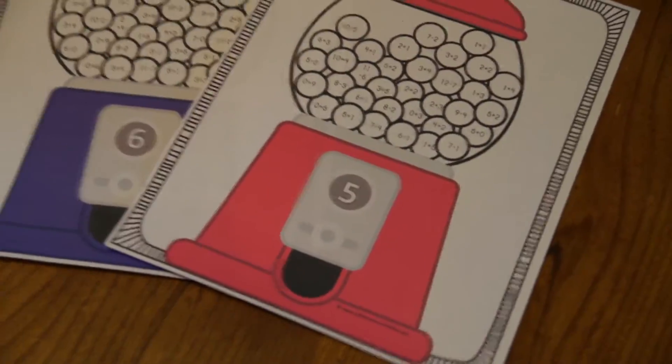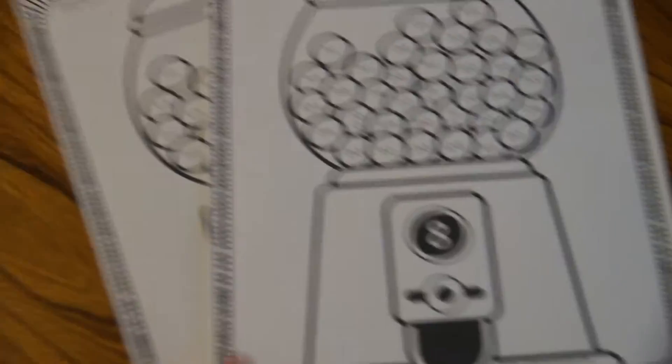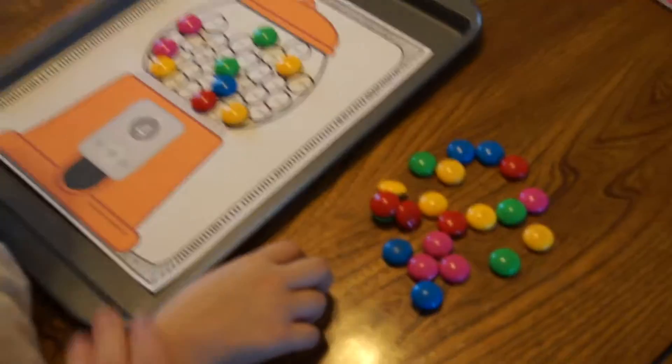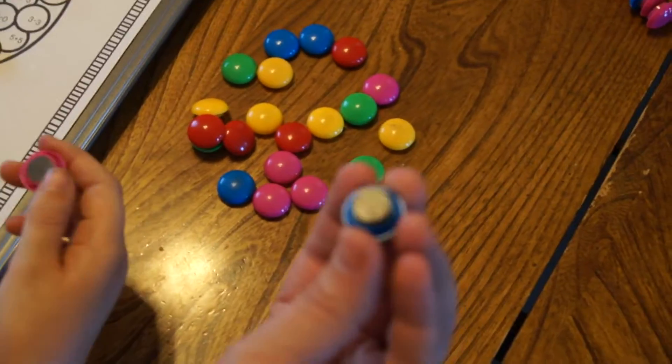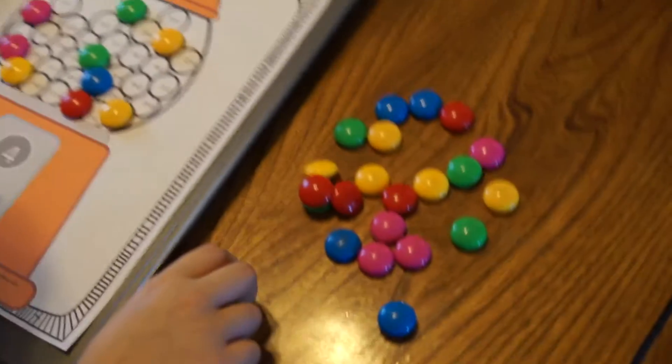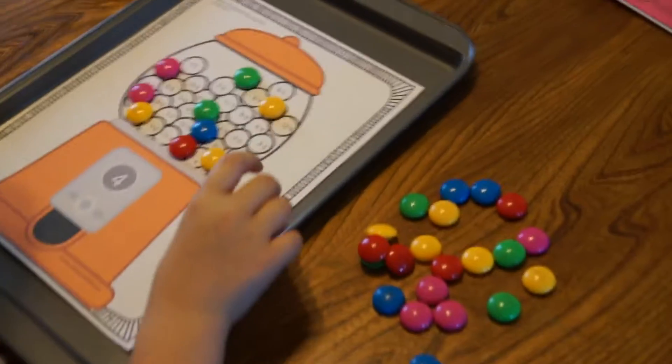The download comes with both color and black and white. If you're using color, I highly suggest you use them with a cookie sheet and with these circle magnets because then it's reusable. This is great for a math center or just some reusable fun.